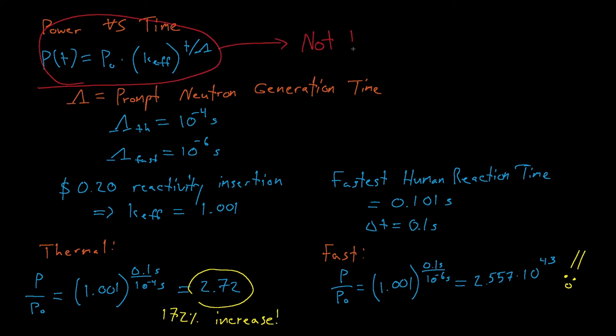Clearly this model is not realistic. Thermal reactors operate all the time without having such huge destabilizing power swings, and we've actually operated fast reactors at steady state without blowing up the universe. So why is our naive model incorrect? Our model is wrong for two reasons, delayed neutrons and feedback.